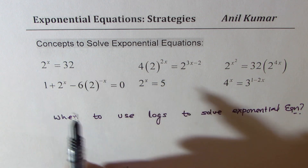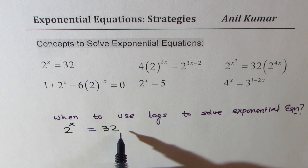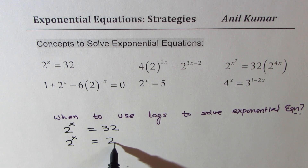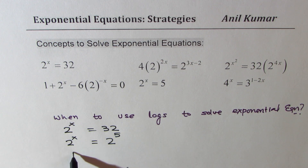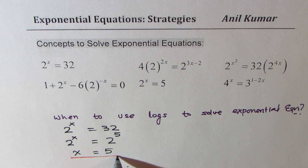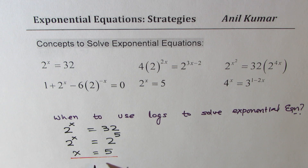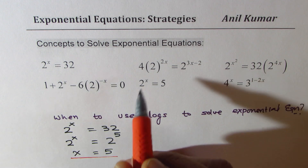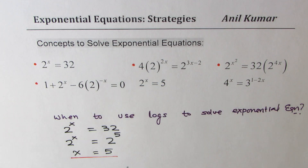So let me take up this solution. We have 2 to the power of x equals 32. I could write this as 2 to the power of x equals 2 to the power of 5, since 2 to the power of 5 is 32. Now when you have the same base, the exponents must be exactly the same. Therefore we get x equals 5. This is a very simple solution — we do not use any logarithms. We are making the same base and then comparing the exponents. This strategy is followed whenever you can make the same base, so these equations can be solved without logarithms.